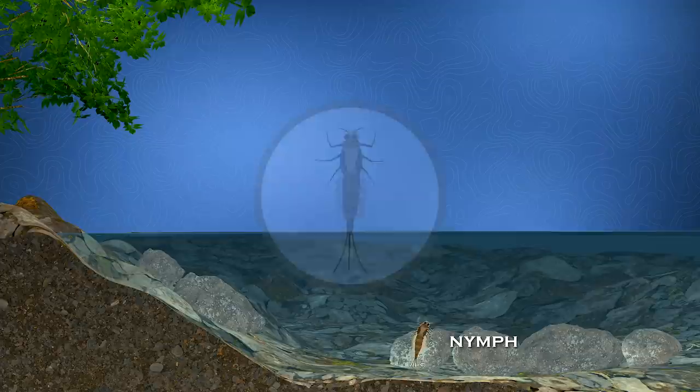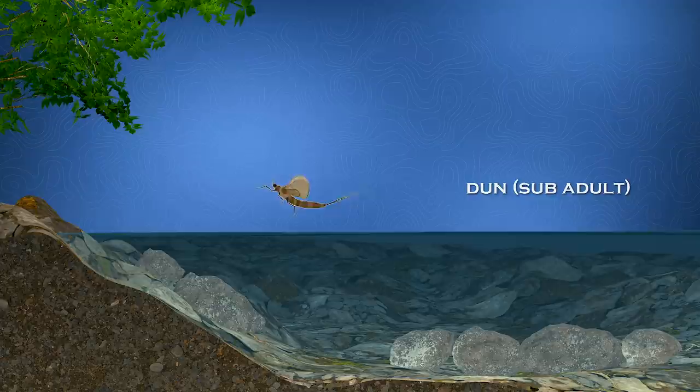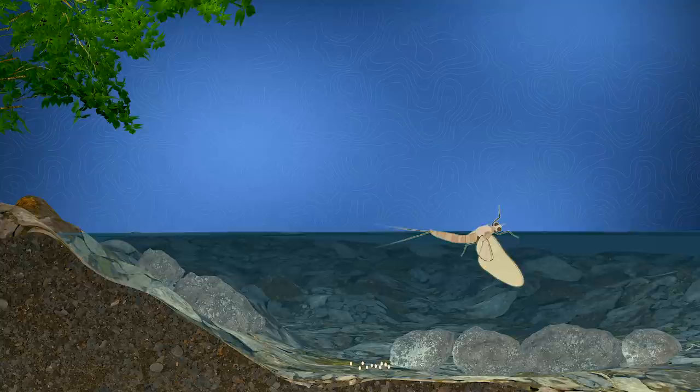Mayflies live as larvae for almost a full year underwater and then rise to the surface to hatch into what we call a dun, or sub-adult. These flies then fly into nearby trees, molt, and turn into the full adult called a spinner in a day or two, which then return to the water and lay their eggs. Trout eat the nymphs or larvae throughout the season, but they only have access to the adults when they rise to the surface.